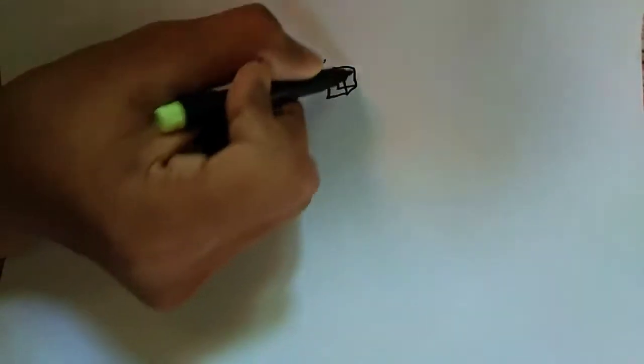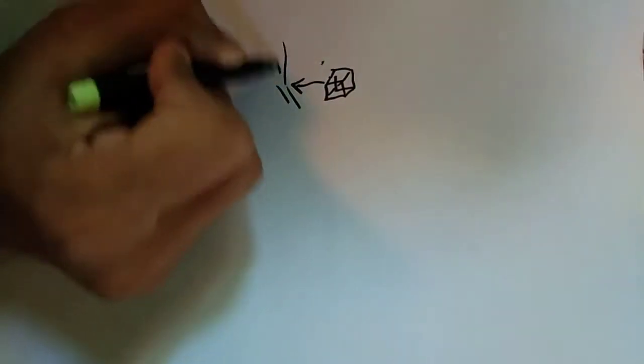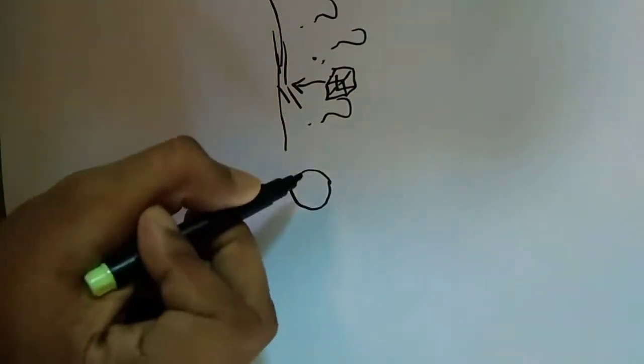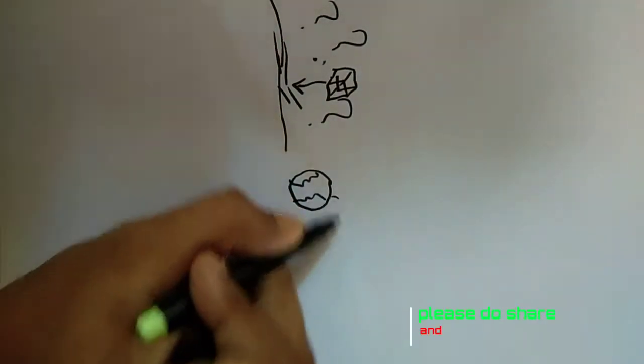Gravity is the force by which a planet or other body draws objects towards its center, and the force of gravity keeps all of the planets in orbit around the sun.